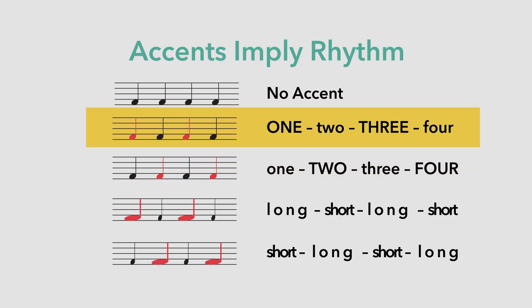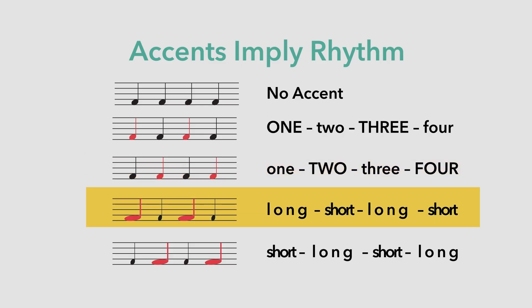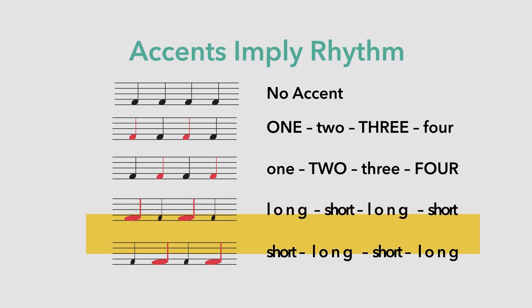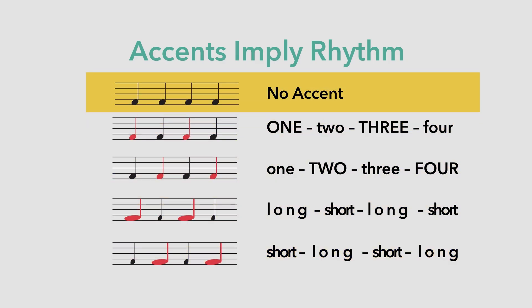For example, beats can be accented as 1, 2, 3, 4 with the kick emphasized, versus 1, 2, 3, 4 with the snare emphasized. Or they can choose to vary the duration — for example, long-short-long-short versus short-long-short-long. Some music, like techno or electronic dance music, will choose to not accent the beats at all, so that your attention is drawn to the rhythm as a whole, and not the sections of the piece.